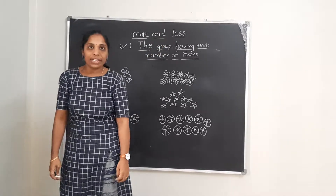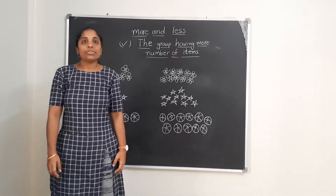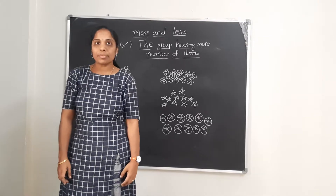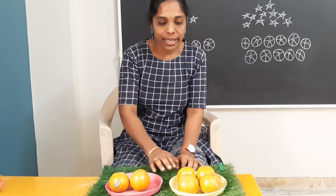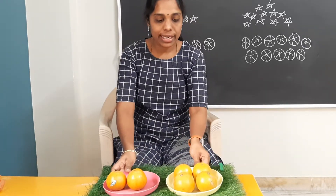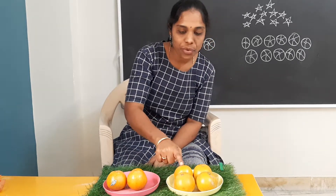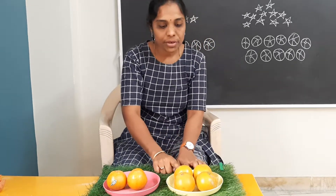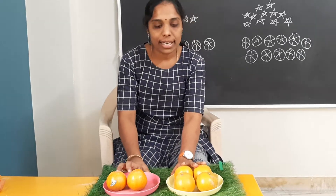I am having different types of objects, fruits and vegetables, so that we can learn the more and less concept very easily. Here I am having oranges in two planes. Let us count the oranges: one, two, three, four. Here I am having four oranges in one plane, and one, two — two oranges in another plane. This is more and this is less.